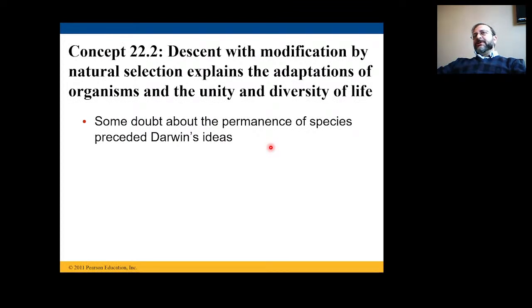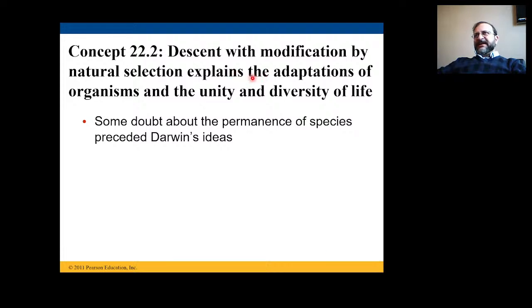Descent with modification by natural selection is Darwin's idea that explains the adaptations of organisms and the unity and diversity of life. Darwin explained three things: unity and diversity of life, adaptations of organisms to their environment, and descent with modification by natural selection. Some doubt about the permanence of species preceded Darwin's ideas.